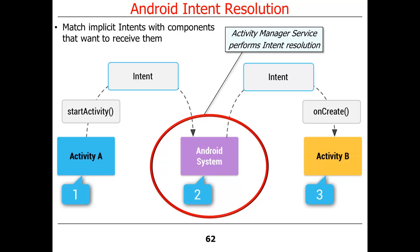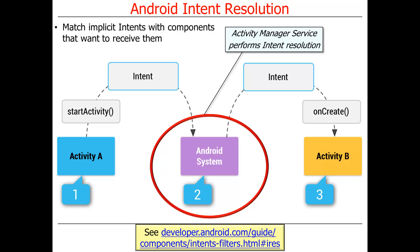The Android Activity Manager Service — one of the core system services in Android — looks at all the various components registered with the system. These registrations typically occur when an application is downloaded from the Play Store and its package is parsed by the package manager. That populates internal data structures Android uses to figure out what handles what types of intents. Based on what it discovers, it activates a second activity and starts lifecycle operations, such as calling its onCreate hook method.